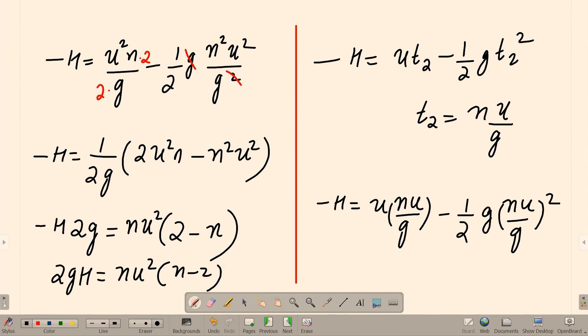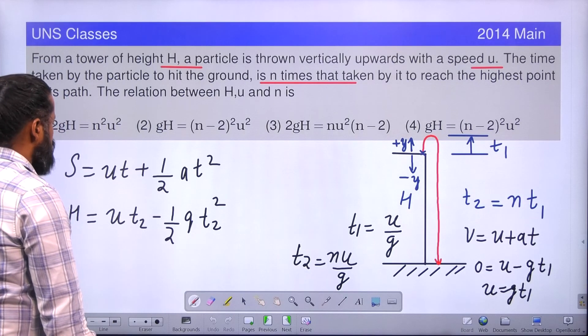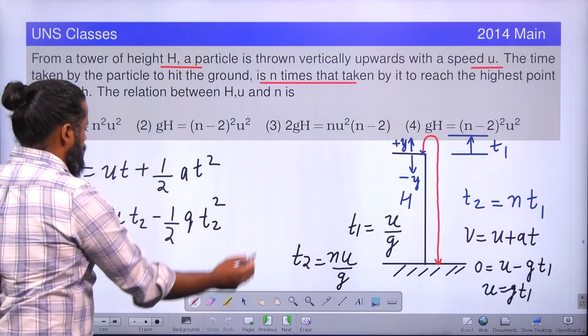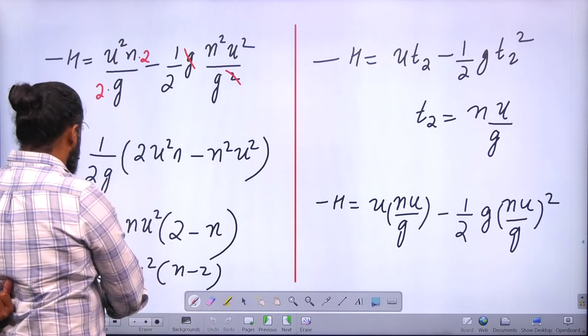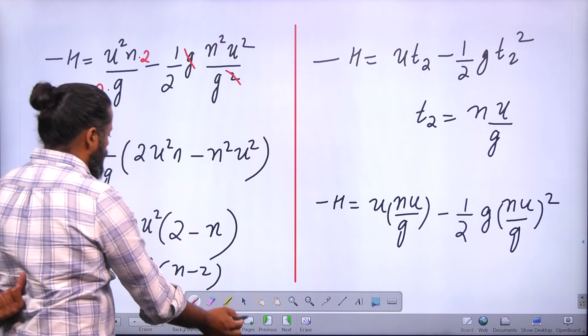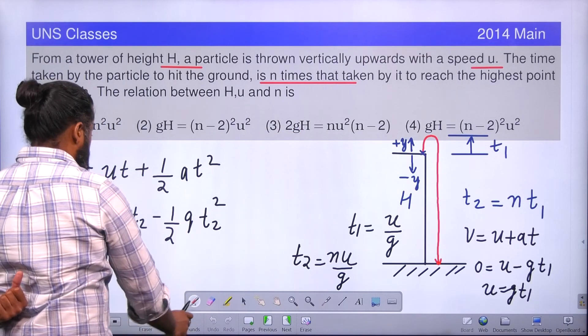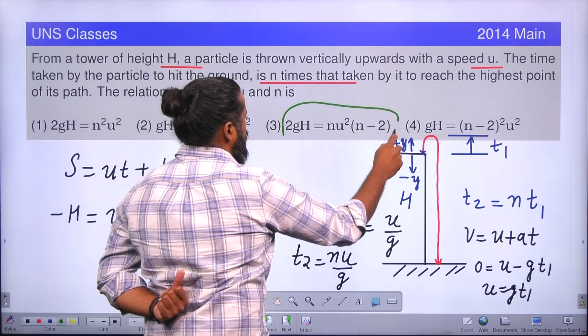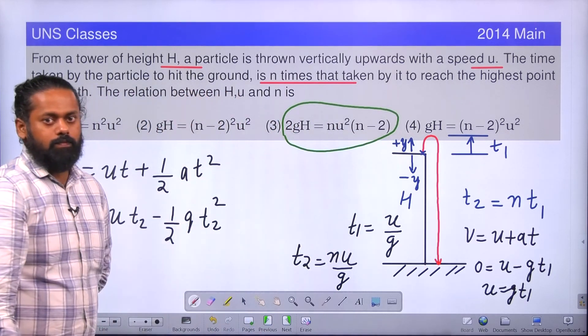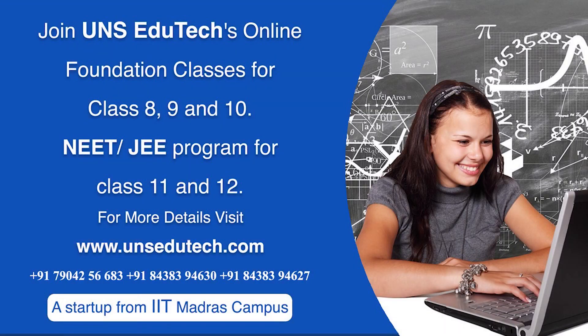Let us see if any option is matching or not. 2 G H is equal to N, yeah, third option is matching. 2 G H is equal to N U square into N minus 2. This is the correct answer. I hope all of you understood this solution. Thank you.